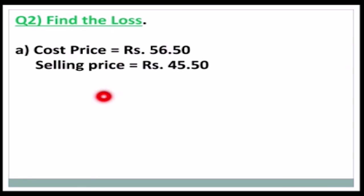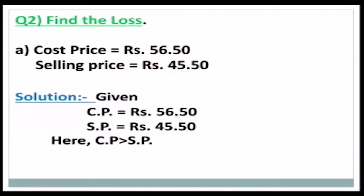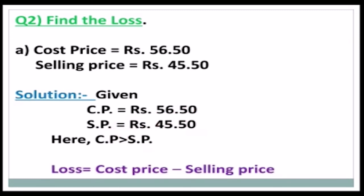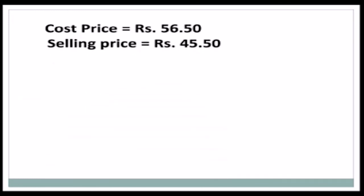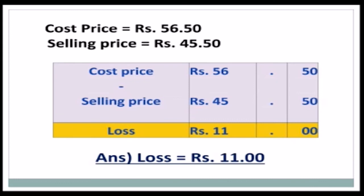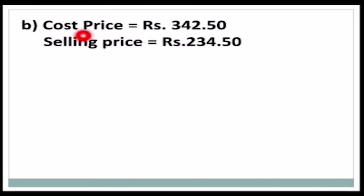Question 2: Find the loss. (a) Cost Price = rupees 56 and 50 paise; Selling Price = rupees 45 and 50 paise. CP is greater than SP, so there is a loss. Loss = CP − SP = 56.50 − 45.50. Subtracting: 0 − 0 = 0, 5 − 5 = 0, 6 − 5 = 1, 5 − 4 = 1. There is a loss of rupees 11.